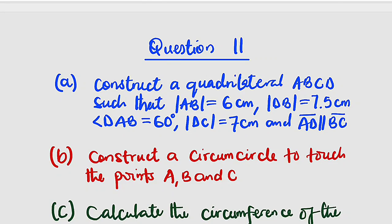Hello, good day viewers. Here is question number 11 of NECO 2024 Mathematics Examination Theory Questions, which is under Geometrical Constructions. Question number 11a reads: construct a quadrilateral ABCD such that line AB is 6cm, line DB is 7.5cm, angle DAB is 60 degrees, line DC is 7cm, and lastly, line AD and BC are parallel to each other.